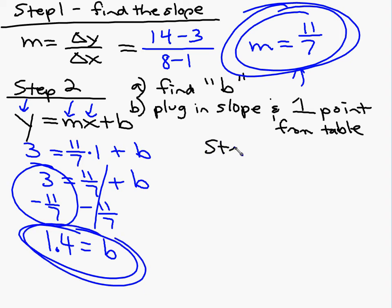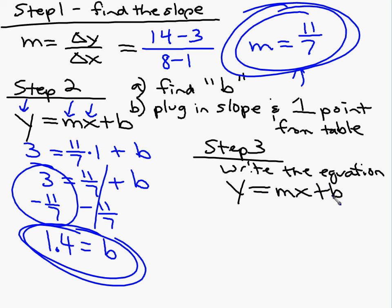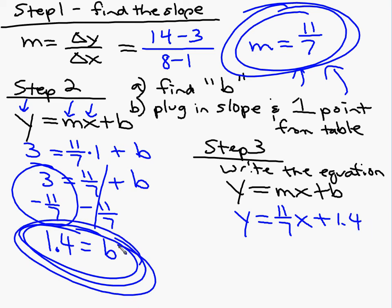Step three is to write the equation. And that's easy once I've got the slope and the Y-intercept. Y equals MX plus B is my road map. I know the slope - here's the slope, 11 sevenths. So I'm going to have Y equals 11 sevenths X plus what? 1.4. The 1.4 that we just found over here. So now we've got our equation of the line of best fit.